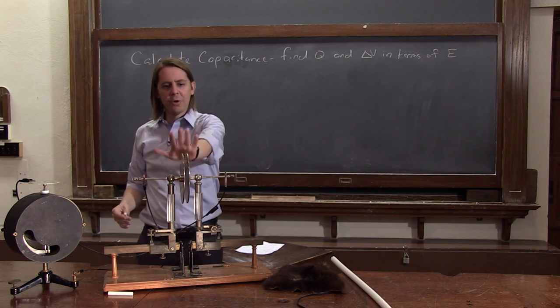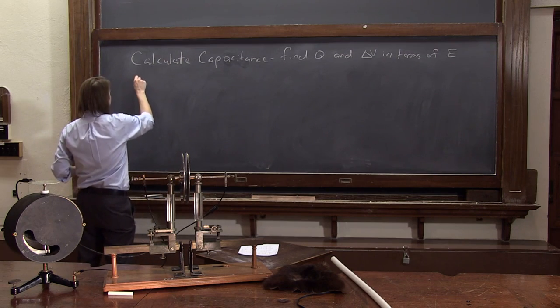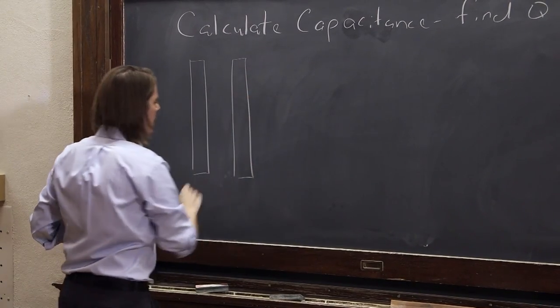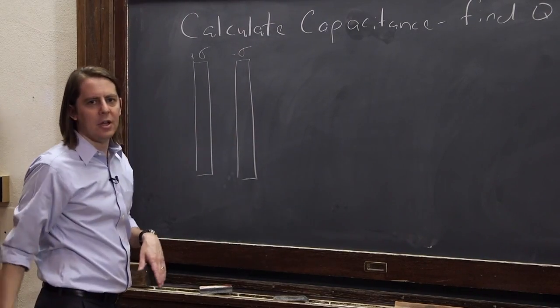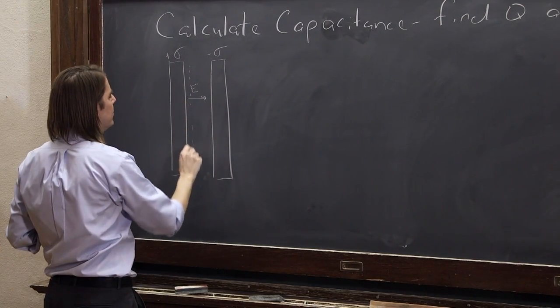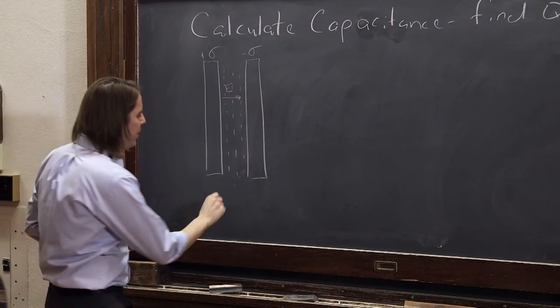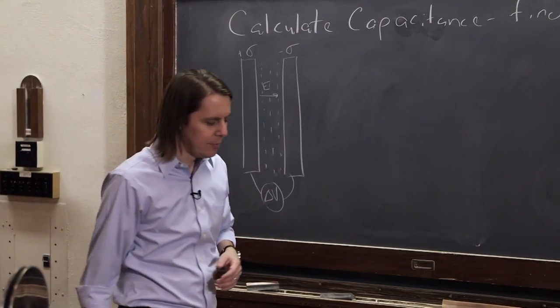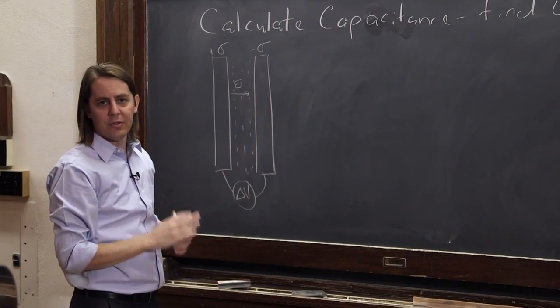The parallel plate capacitor has your two plates like this. Each one has some charge on it. One has some positive charge density on the surface, one has some minus charge density on the surface. When they're close together, they make an electric field on the inside and make equipotential lines or surfaces between them like that. They have a delta V between them. We're approximating them as infinitely charged planes.